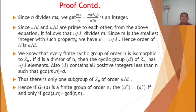Thus there is only one subgroup of Z_n of order n/d. Hence if G is a finite cyclic group of order n, then a raised to s equals a raised to t if and only if GCD(s, n) equals GCD(t, n).